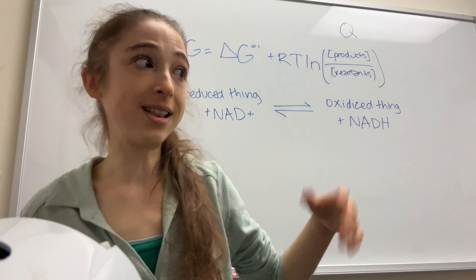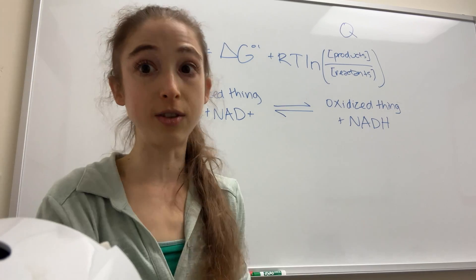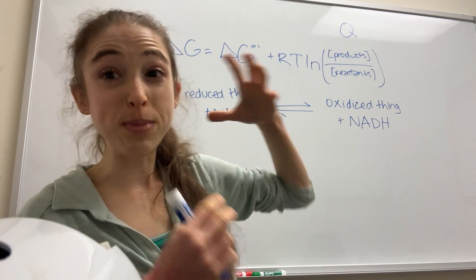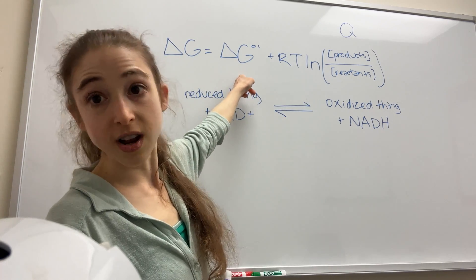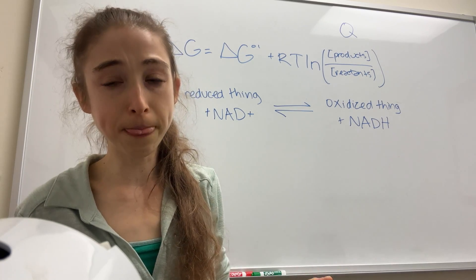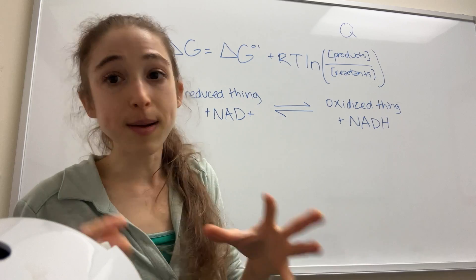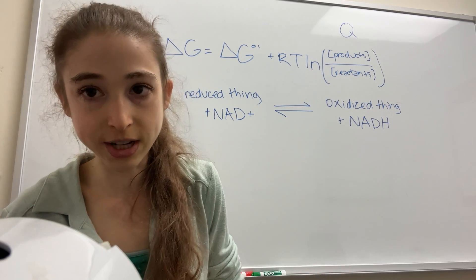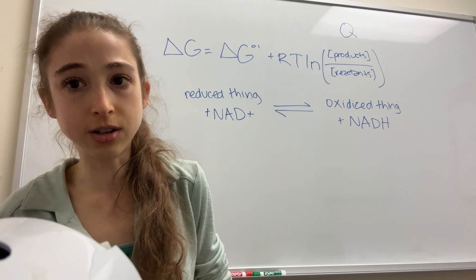That's Le Chatelier's whole thing. If you have a bunch of your reactants, you're going to be driven towards products. If you have a bunch of your products, you're going to be driven towards reactants. How big that ratio needs to be to skew things one way or another is going to depend on your delta G-naught prime. Bottom line: we have our delta G-naught prime to tell us about inherent favorability, but then we have to take into account the actual conditions like our concentrations. We can do this for all sorts of reactions, including redox reactions.